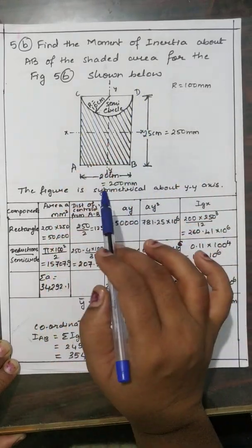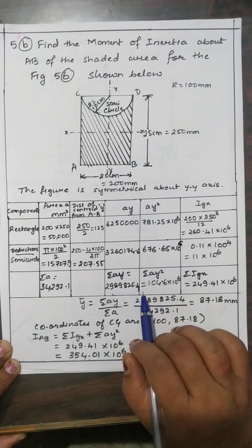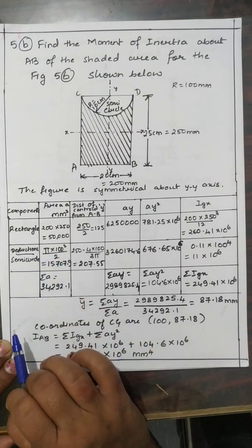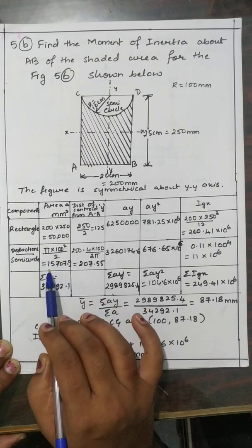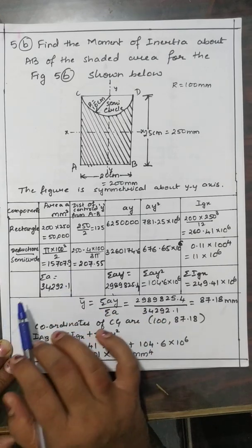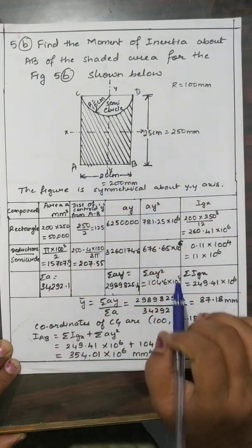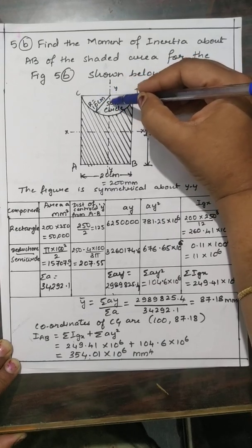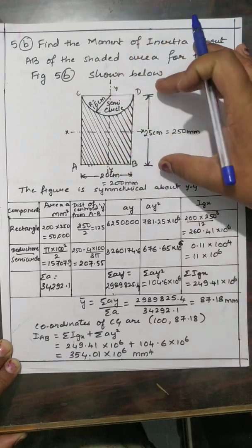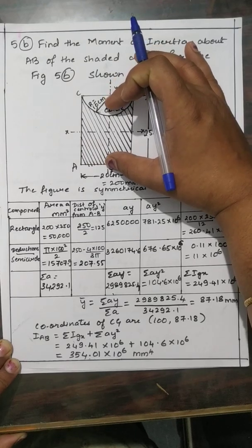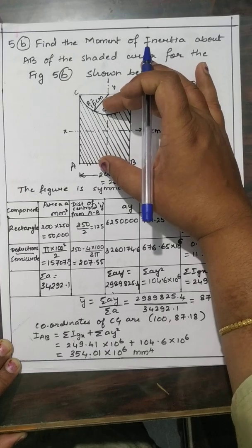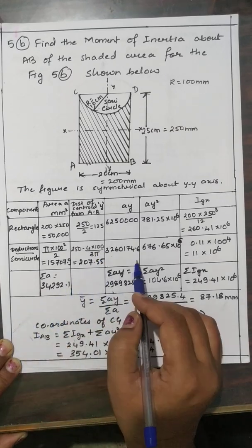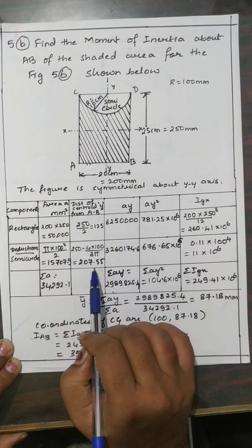Now we subtract the semicircle. The area of the semicircle is πR²/2 = π × 100² / 2 = 15,707.9 mm². The centroid of a semicircle from its diameter axis is 4R/3π. The total distance from AB is 250 minus 4R/3π = 250 − (4 × 100)/(3π) = 207.55 mm.